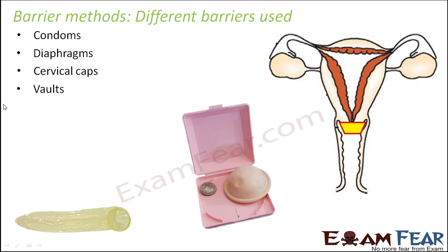Although all these barriers do the same job, their structure and how they are inserted are all a little different. Condoms are like a covering for the external part of the male, and they are available also for females. In the case of males, it is like a covering for the penis, so that whatever ejaculation comes out of the penis gets collected into this bag instead of getting into the vagina directly. Similarly, for female condoms, they are inserted into the vaginal space so that the sperms ejaculated from the male cannot enter inside the female reproductive tract.